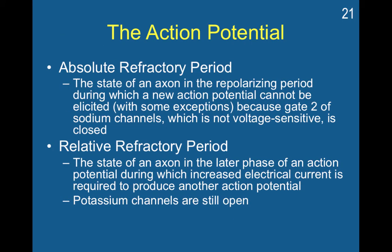An action potential has an absolute refractory period and a relative refractory period. The absolute refractory period is the point at which, once an action potential has started, a new one cannot start. This has to do with voltage-sensitive channels that can only open during certain voltages. If an action potential has started and the inside of the cell has become more positive, you cannot suddenly open the sodium channels again — they can only open at negative 50 millivolts. So once an action potential has started or just finished, the neuron has to recover all the way back to baseline. During the absolute refractory period, an action potential cannot start again.